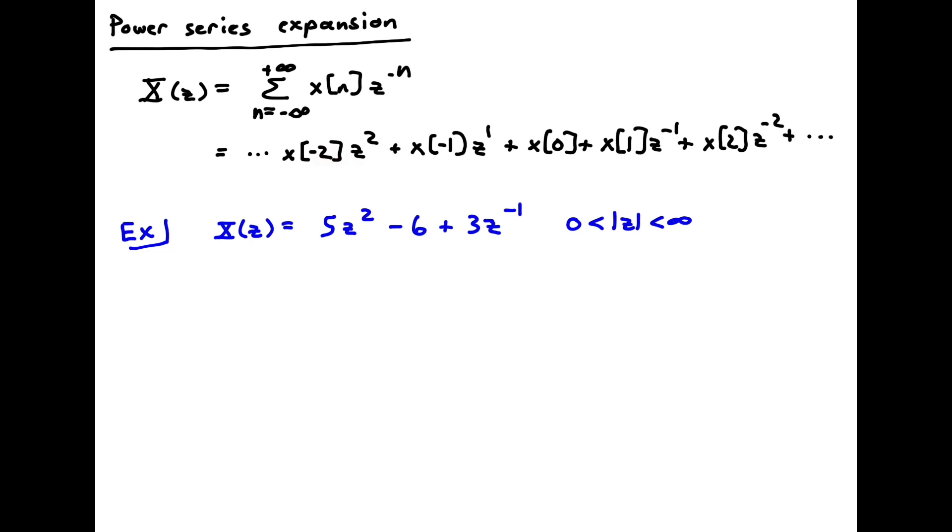So x of minus 2 z squared, plus x of minus 1 z1, plus x of 0, plus x of 1 z inverse, etc. And obviously there are an infinite number of terms this way and an infinite number of terms that way. But we can see that if we end up with a z-transform that's of this form, x of z is equal to 5 z squared minus 6 plus 3 z inverse, it's quite easy to simply match these terms up here.